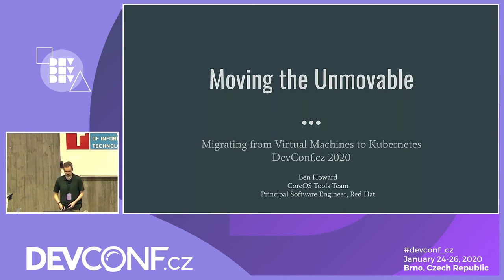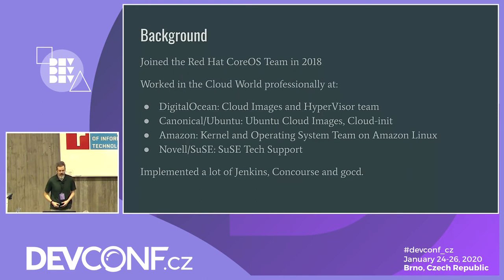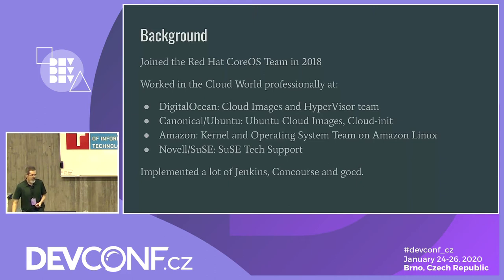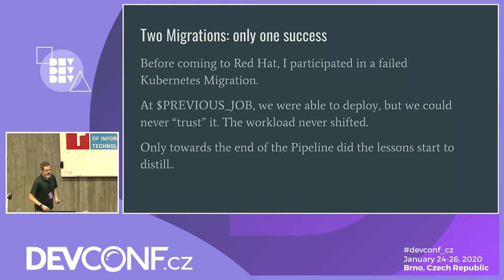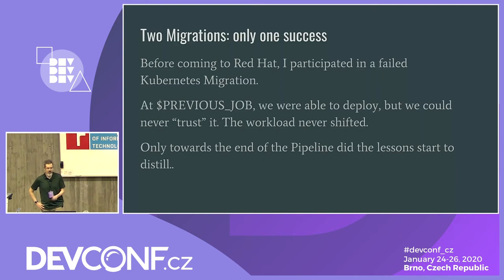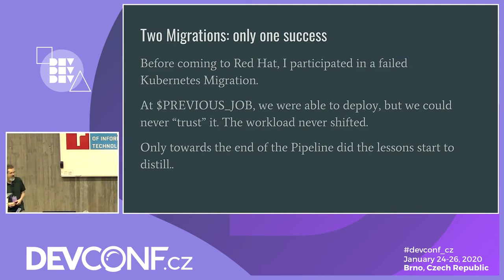By way of background, I've been in the cloud space professionally for the better part of 15 or 16 years. I've done a lot with Jenkins, Concourse, GoCD, CI — that sort of stuff. This is actually the second or third migration I've done, and this is the only one I would consider a success. Before I came to Red Hat I worked for a small company in the financial sector.